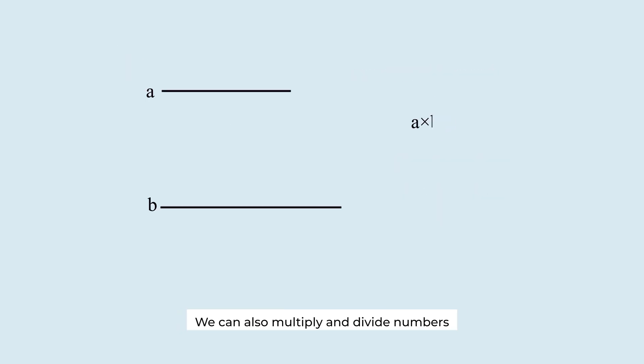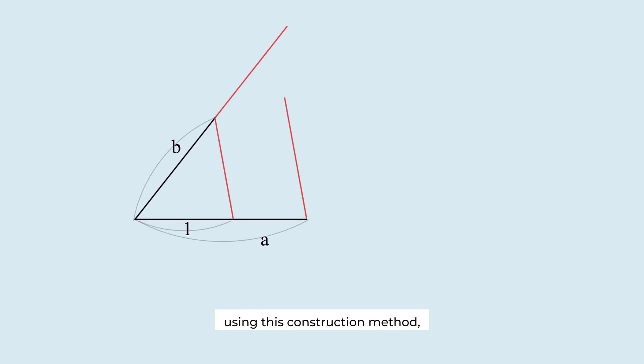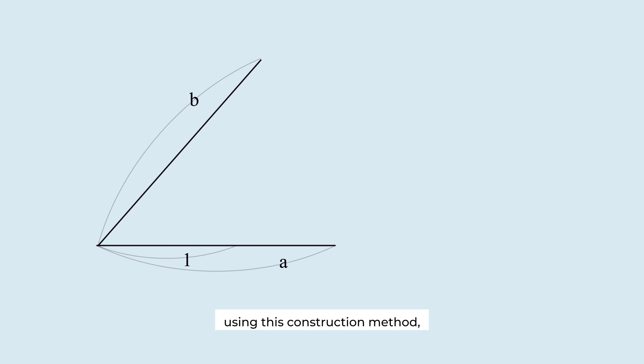We can also multiply and divide numbers using construction. Using this construction method, this length represents the product AB of two numbers A and B. Using this construction method, this length represents the division B over A. Since A and B are rational, AB and B over A are also rational. So, can we create only rational numbers through construction?